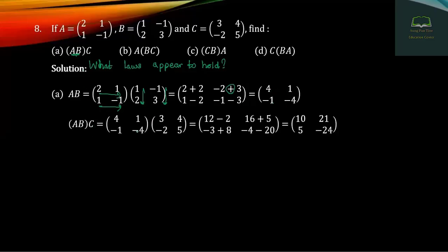Now 4 column: minus 1, minus 4, minus 4, minus 4. 3, 4, minus 2, 5. First row, first column: minus 2, minus 2. First row, second column: minus 2, minus 2, minus 16, minus 5, plus 5. Second row, first column: minus 2, minus 3, minus 8, plus 8. Second row, second column: minus 4, minus 4, minus 2, minus 20. Then minus 5, minus 4, minus 4, minus 3, minus 4.